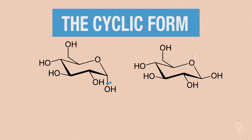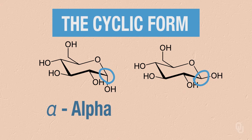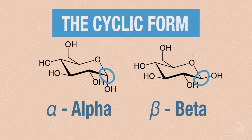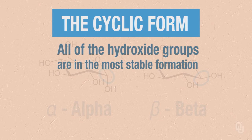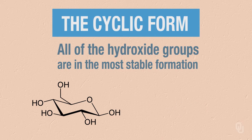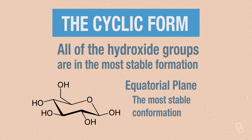Notice when we do this that we have one position that has two possibilities. How this occurs is that one of those alcohols comes around and attacks our carbonyl position. When it attacks that carbonyl position, that hydroxide that's formed can either go up or can go down. So we can either end up with an alpha or a beta. This is going to be important as we look at the functionality of larger carbohydrates. Here we have simple glucose, and all of the hydroxide groups are in the most stable formation. If we look at beta-D-glucose, you'll see that all of our hydroxide groups are in the equatorial plane, which is the most stable conformation.